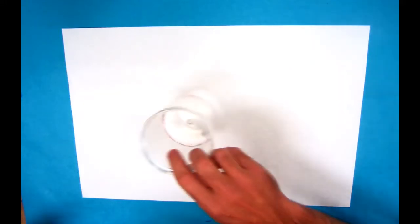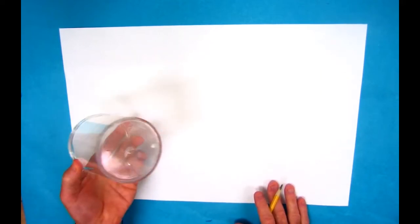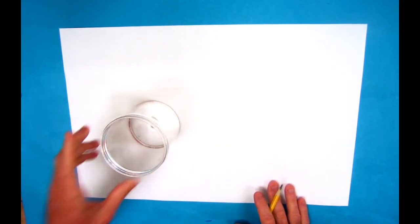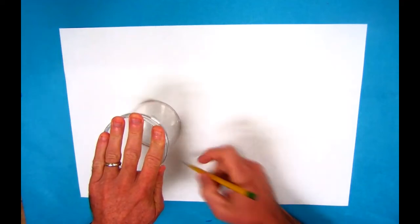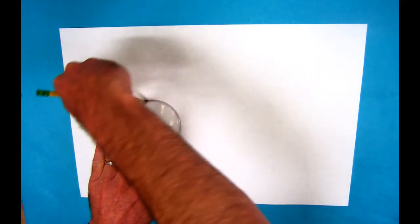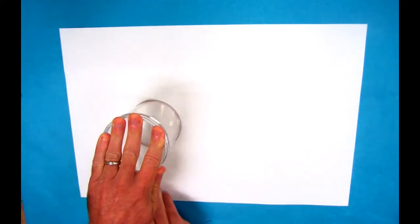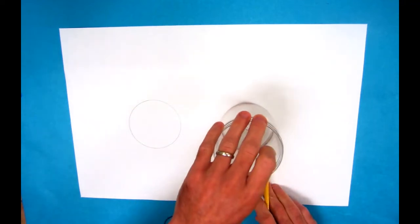Hey guys, for this drawing I'm going to be using a round object. I have this clear container here that's going to be helpful for making perfect circles. You want to make sure that you don't get too bumpy on that.